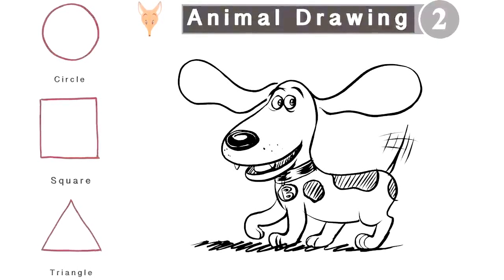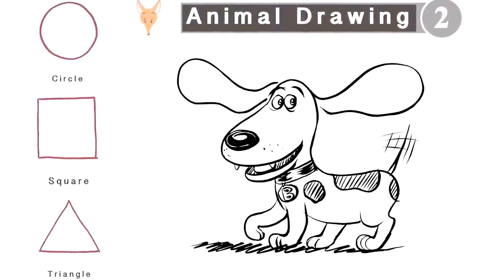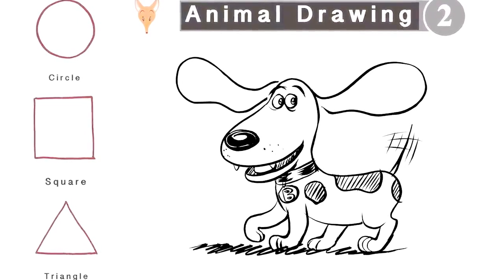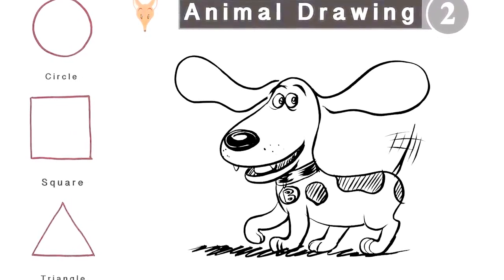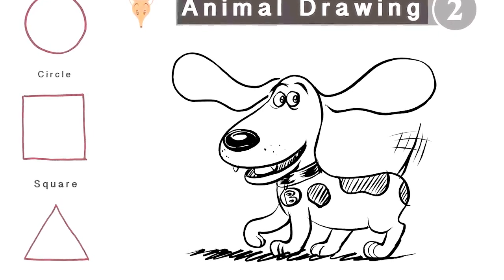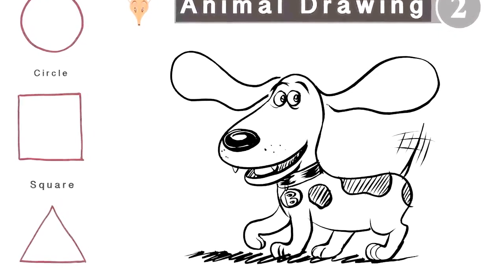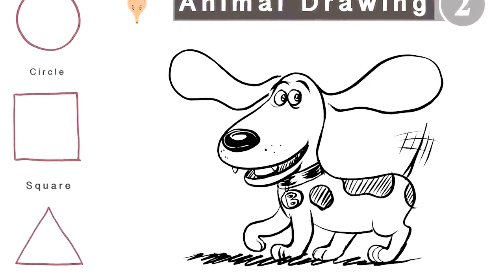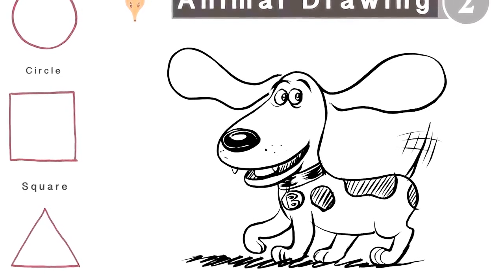Today we're going to draw a beagle, a dog kind of like Snoopy. I had a beagle when I was little. Beagles have lots of circles, maybe some squares and a couple of triangles. Let's start.